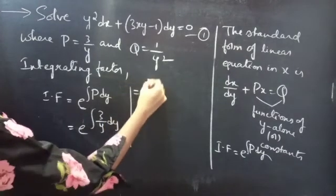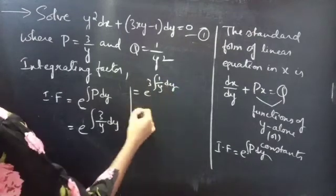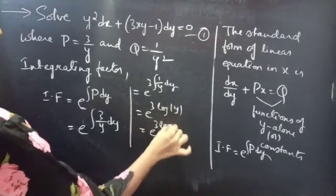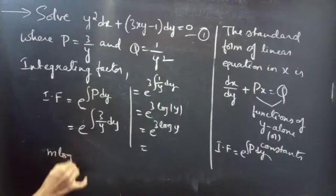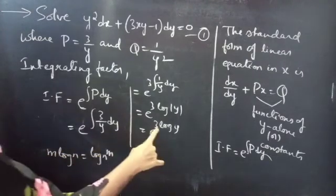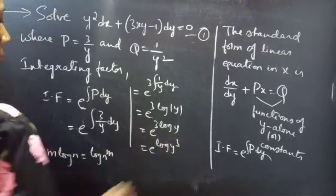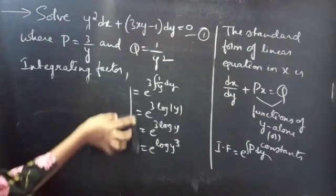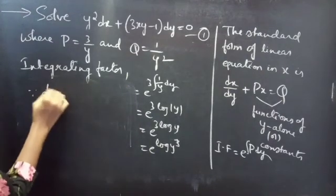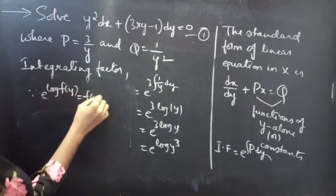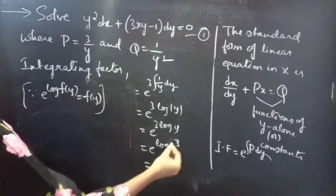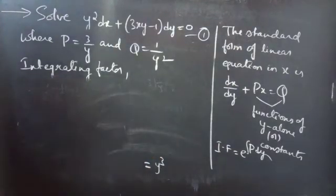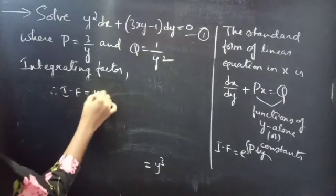We know that the integrating factor of a linear equation in x is given by e^(∫P dy). So the integrating factor = e^(∫(3/y) dy) = e^(3·∫(1/y) dy) = e^(3 log|y|) = e^(log y³). Since e^(log f(y)) = f(y), our integrating factor is y³.